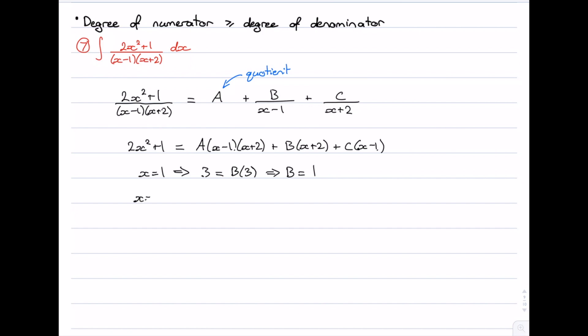I can do a similar thing and let x equal -2. That's going to give me 8 + 1, which is 9 on the left hand side. On the right hand side, the term involving A becomes 0. The term involving B becomes 0. And we're left with C times -3, which means that C is equal to -3.